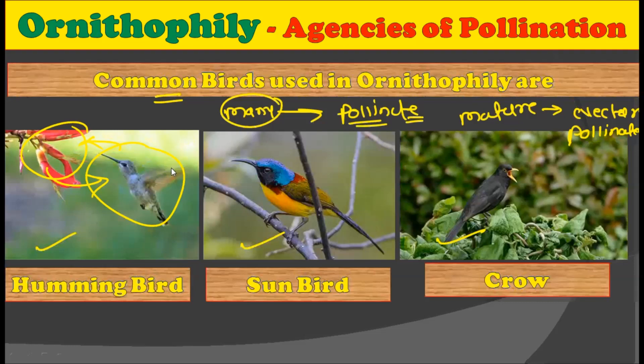This is a mutualistic relationship between plants and animals: birds get nectar from the flower while the flower gets pollinated by the bird. This is a symbiotic type of relationship in which both species benefit from each other. The common birds used in ornithophily are the hummingbird, sunbird, and crow-like bird species.